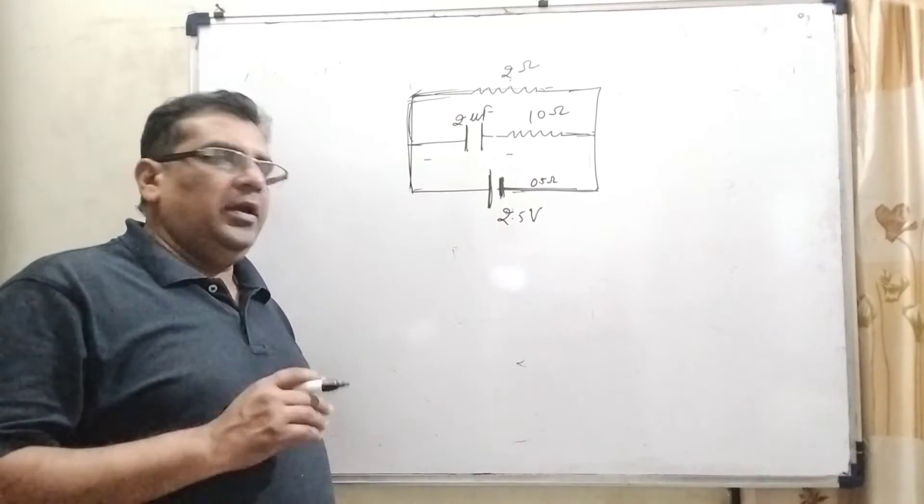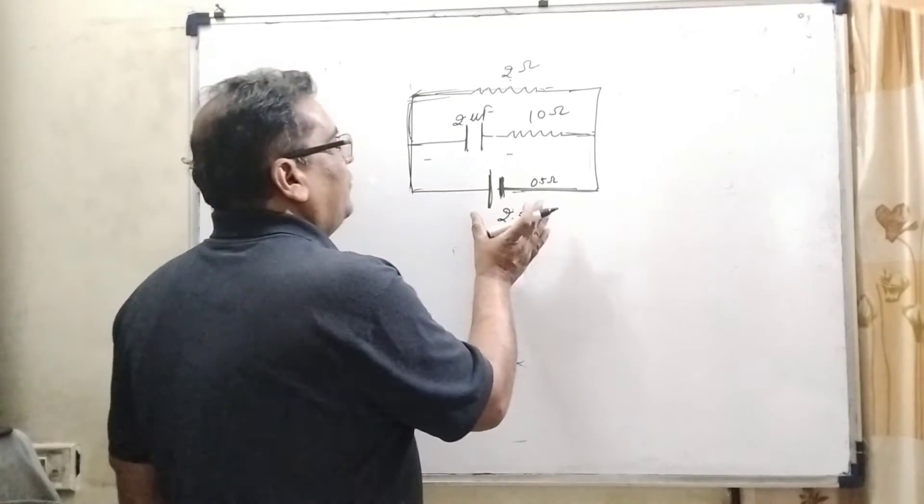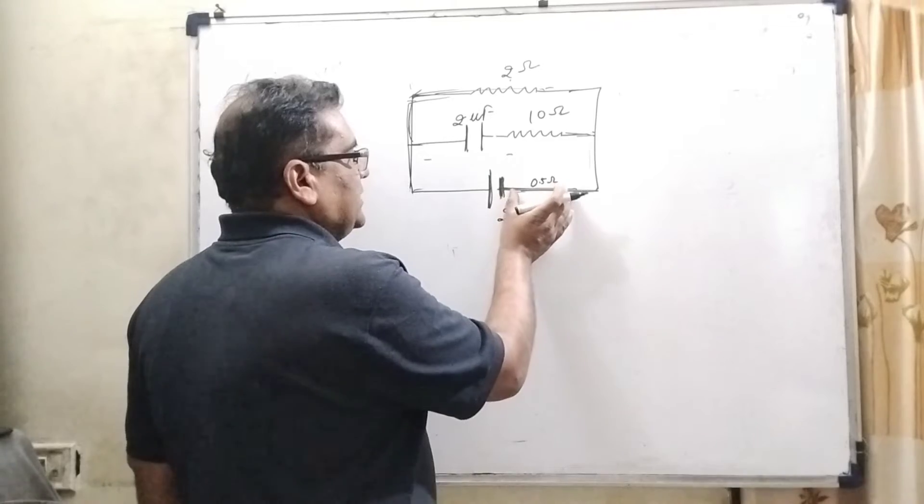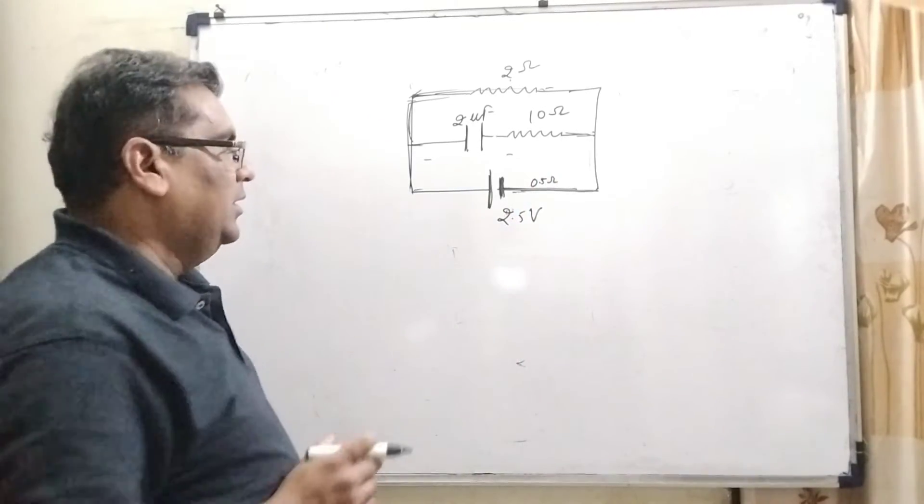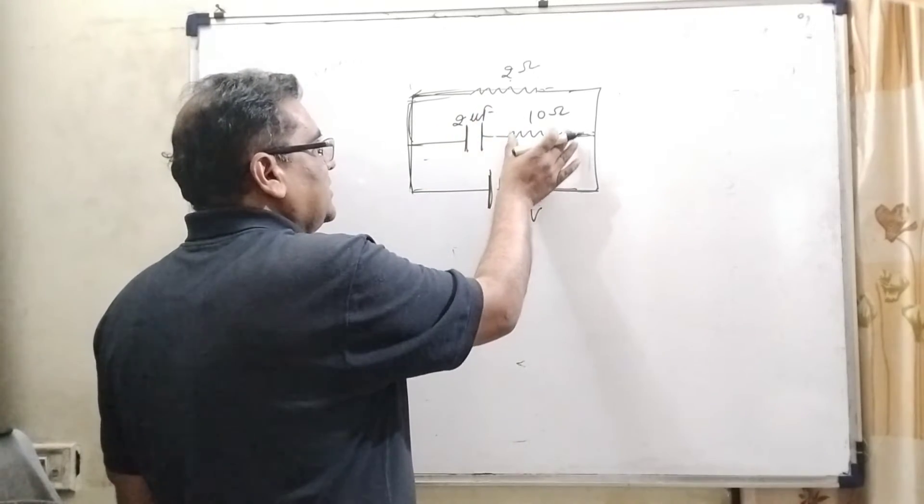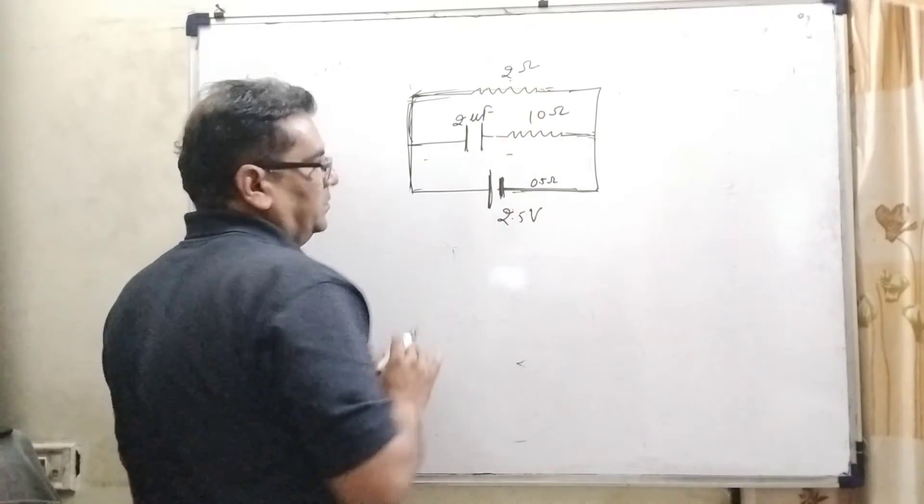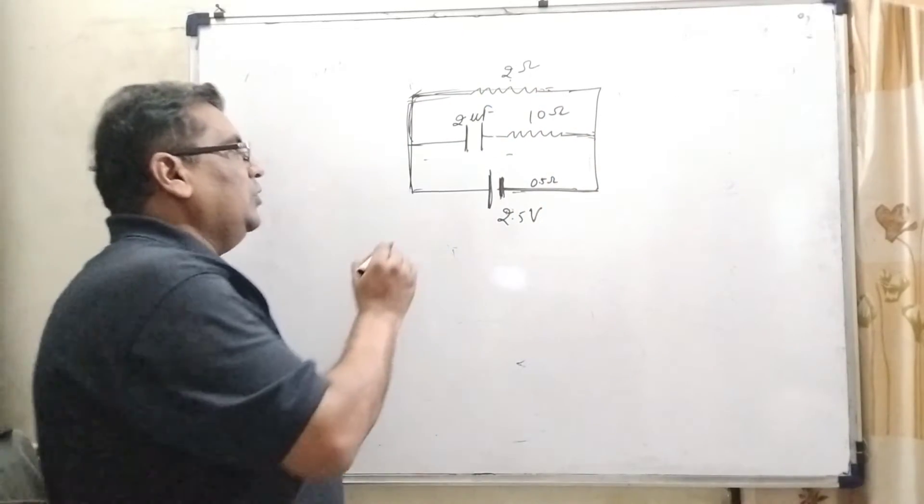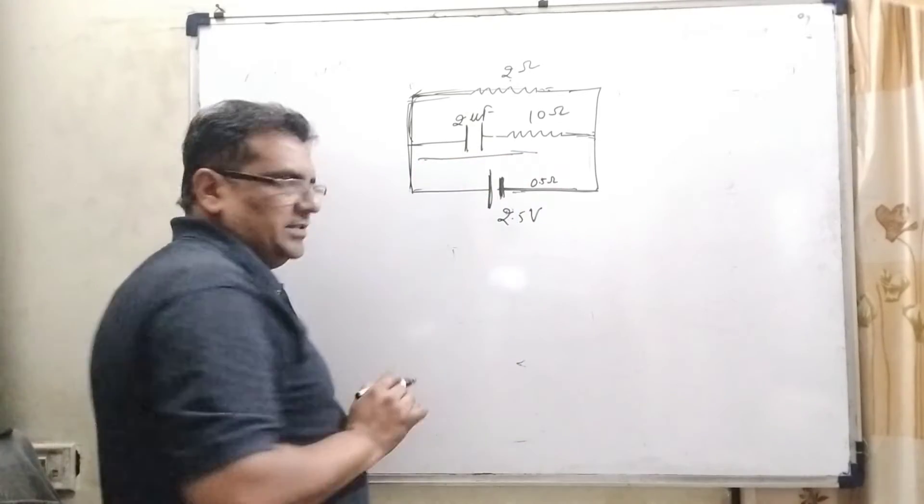Now, according to the diagram, we have given 2.5 volt battery and its internal resistance is 0.5 ohm. In between, capacitor of 2 microfarad and resistance of 10 ohm is connected, and upper resistance is 2 ohm. Here we know that very well, there is no amount of current that will flow through the capacitor.